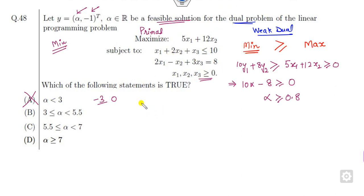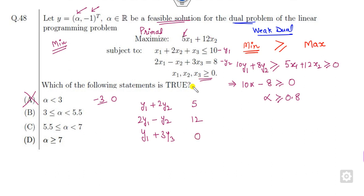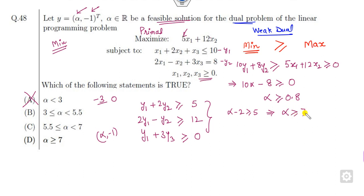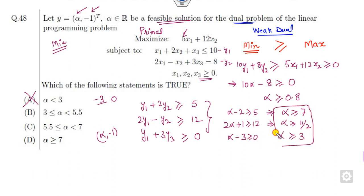Another way is to write the dual of this problem. That gives y₁ plus 2y₂, where y₁ and y₂ are the dual variables. The coefficients of x₁ is 5, coefficient of x₂ is 12, and coefficient of x₃ is 0. Since the problem is minimization, all constraints are greater than or equal. Substituting alpha and minus 1, you get alpha greater than 7, alpha greater than 11/2, and alpha greater than or equal to 3. The common solution is alpha = 7, so the correct answer is option D.